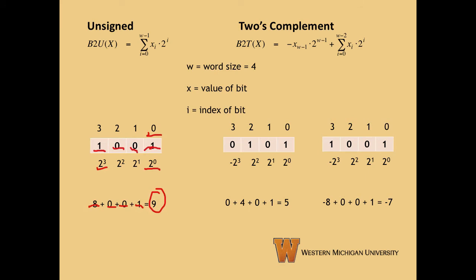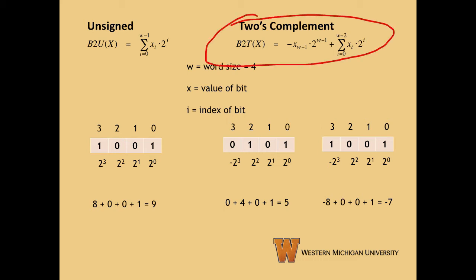Two's complement works the same way. We did two examples to show what happens when you have a one as the most significant bit versus a zero. In the B2T of x function, we still sum everything, but we sum from i equals zero to w minus two, as opposed to unsigned where we sum from i equals zero to w minus one. That's because w minus one is the most significant bit, and that bit is what we care about for signs.